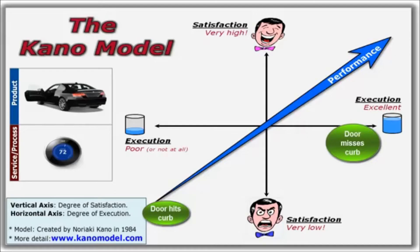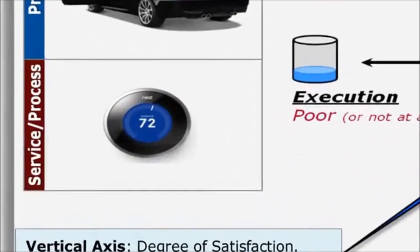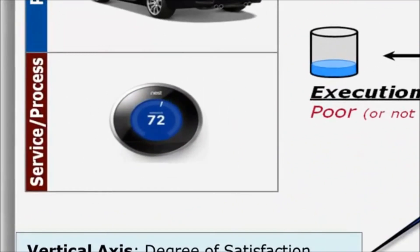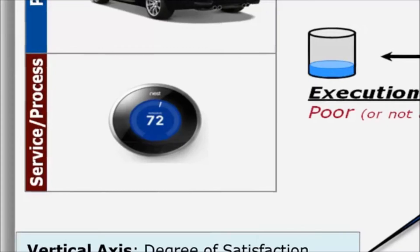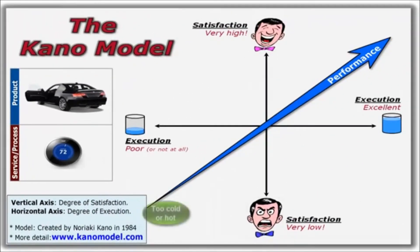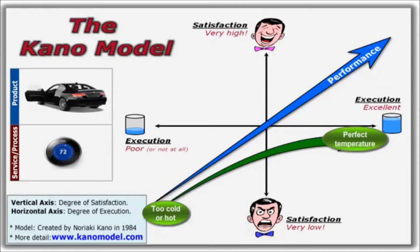If the door easily clears the curb, customers won't even notice and their satisfaction remains neutral. A service example might be providing the right temperature in a hotel's conference room. Too hot or too cold, the guests will likely be very uncomfortable and verbally complain. If the temperature is perfect, customers likely won't even notice. Their satisfaction will remain neutral.